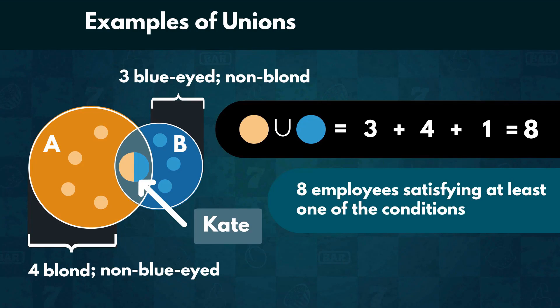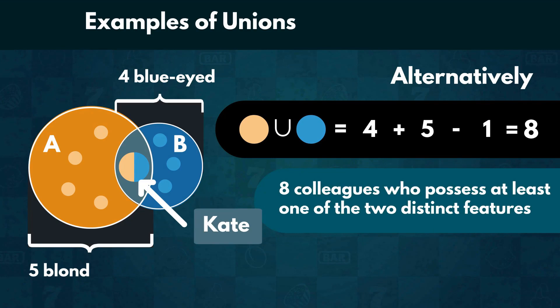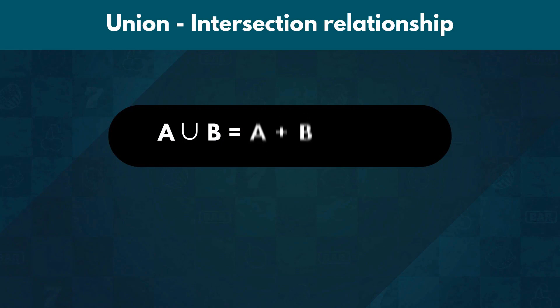Alternatively, we can compute the union using the formula we mentioned earlier. We have five blondes plus four blue-eyed people minus one, for a total of eight colleagues who possess at least one of the two distinct features. In this instance, the minus one represents Kate, who is the intersection, since she is both blonde and blue-eyed. We can use the notation we learned so far to express this: the union of A and B equals the sum of the sets A and B minus their intersection.